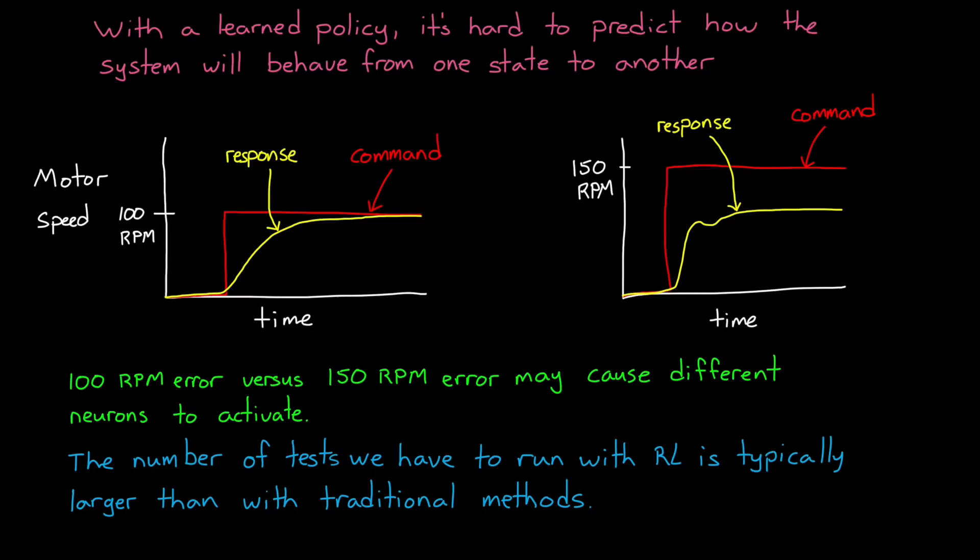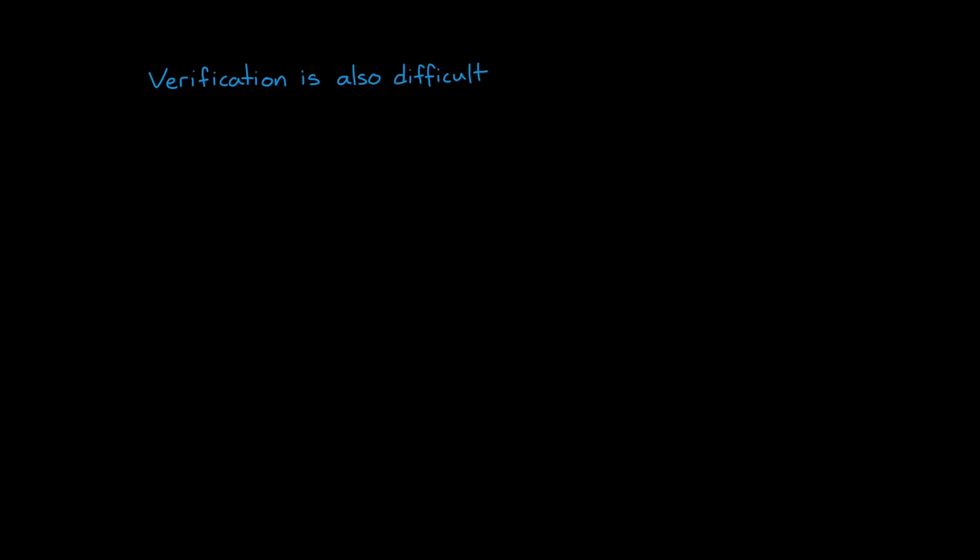And a second reason verification through tests is difficult with neural network policies is because of the potential for extremely large and hard to define input spaces. Remember, one of the benefits of deep neural networks is that they can handle rich sensors, like images from a camera. For example, if you're trying to verify that your system can sense an obstacle with an image, think about how many different ways an obstacle can appear.